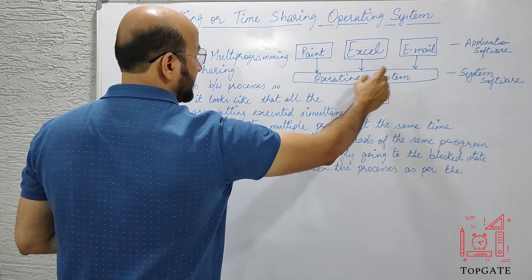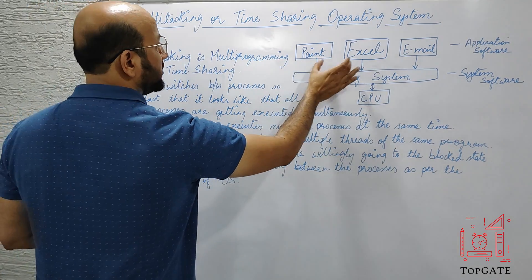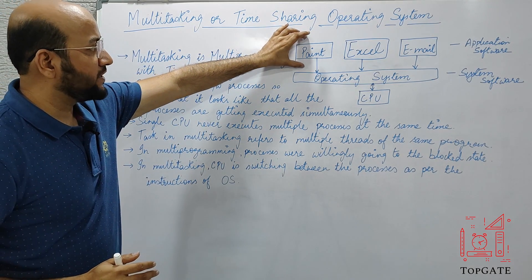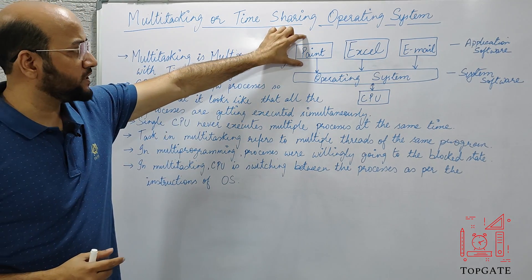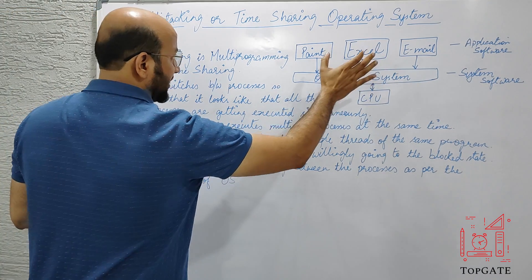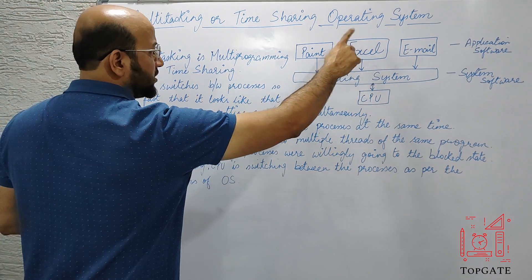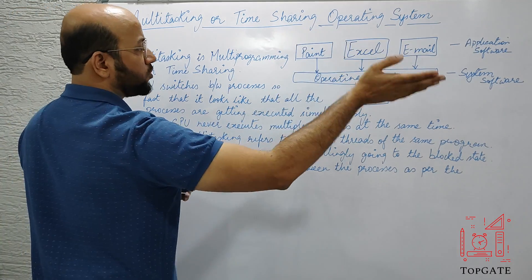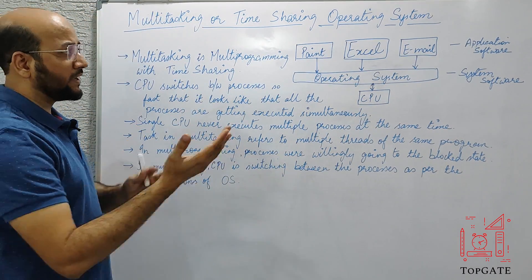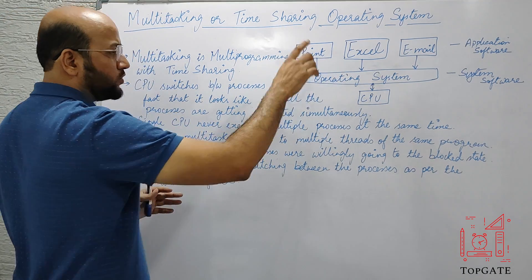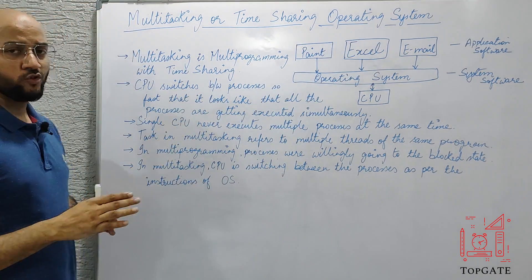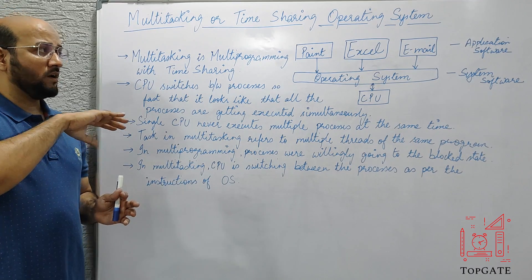The operating system is switching the context between all these processes — Paint, Excel, email — at the same time. It starts execution of one program for a time, switches context to Excel and executes that for a time, again switches to email and executes for a time, then goes back to the first one, then the second, then the third, and so on, switching context from one process to another.